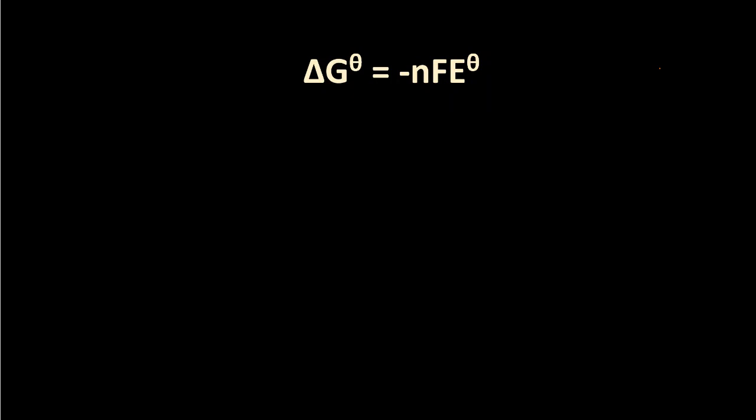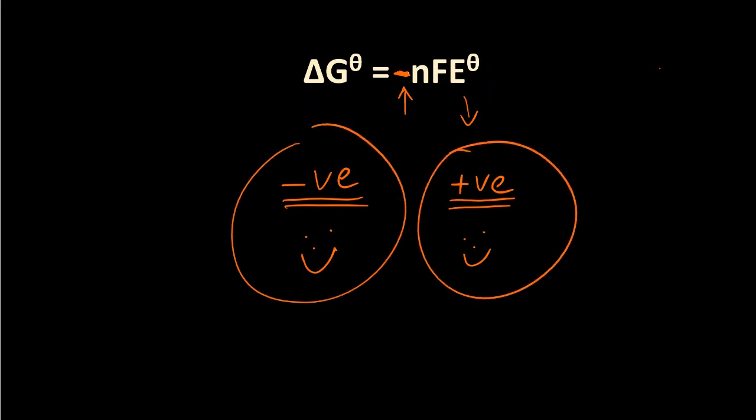I think it bears mentioning that this negative sign here is doing some heavy lifting. If delta G theta, the change in Gibbs free energy is negative, you've got a spontaneous reaction. And if E cell is positive, the voltage for your voltaic cell is positive, you've got a spontaneous reaction. And it's this negative sign that's changing the equation signs. I might get a tattoo like that on my head. It's kind of fun.